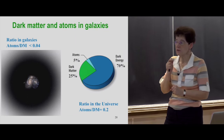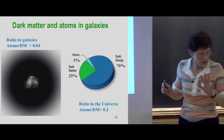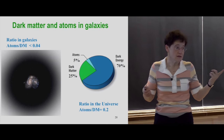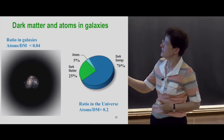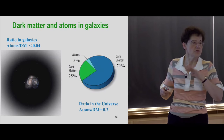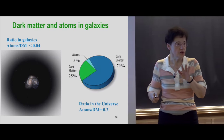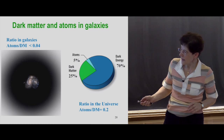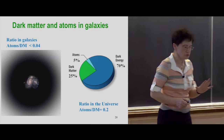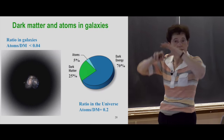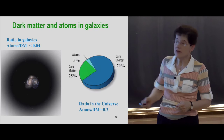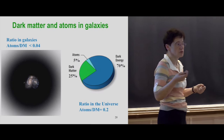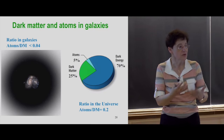Now we want to solve with black holes the problem of galaxy formation. In the universe you have 5% of baryons, 25% of dark matter, and 70% of dark energy. The ratio of atoms to dark matter in the total universe is 0.2. But in galaxies, you have a halo of dark matter around the baryons, and the ratio is always lower than 0.04 — that is 20% of the universal ratio. This is a big problem. You have to eject all baryons from the galaxies to understand what is happening.